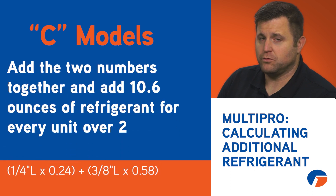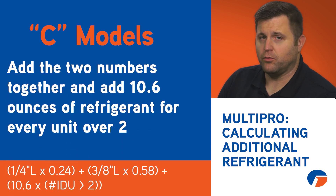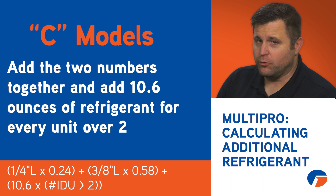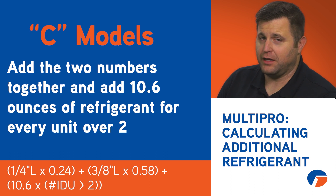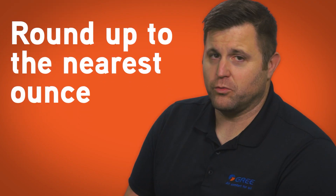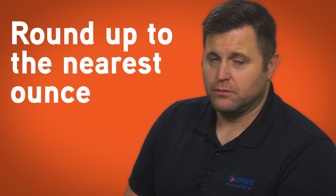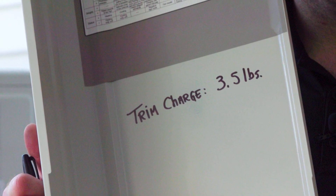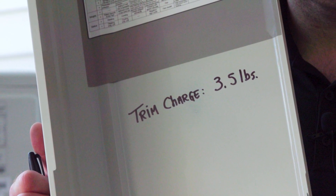You'll now add those two numbers together. Finally, you'll add 10.6 ounces for every unit over two — in other words, you'll add 10.6 ounces for the third, fourth, fifth, sixth, seventh, and eighth units. Then you'll round up to the nearest ounce. You'll write this down on the inside of the access panel on the outdoor unit for future reference.